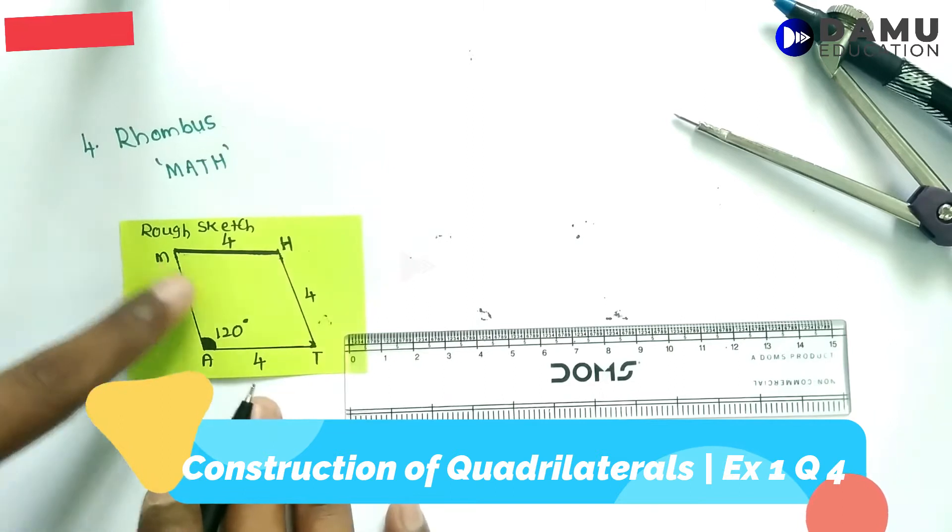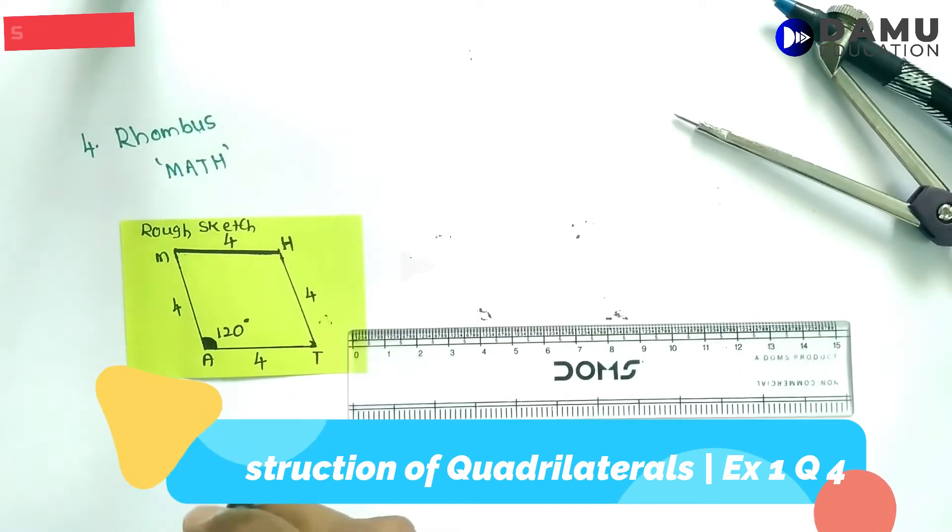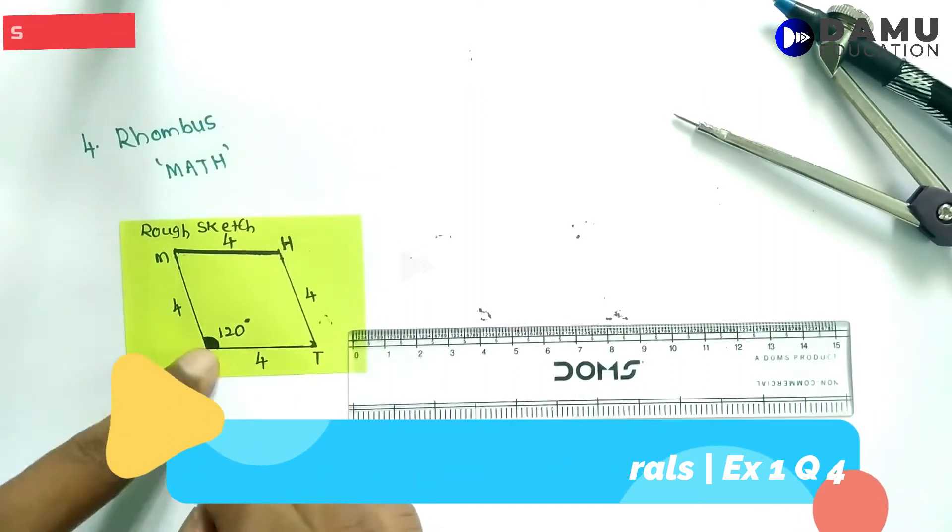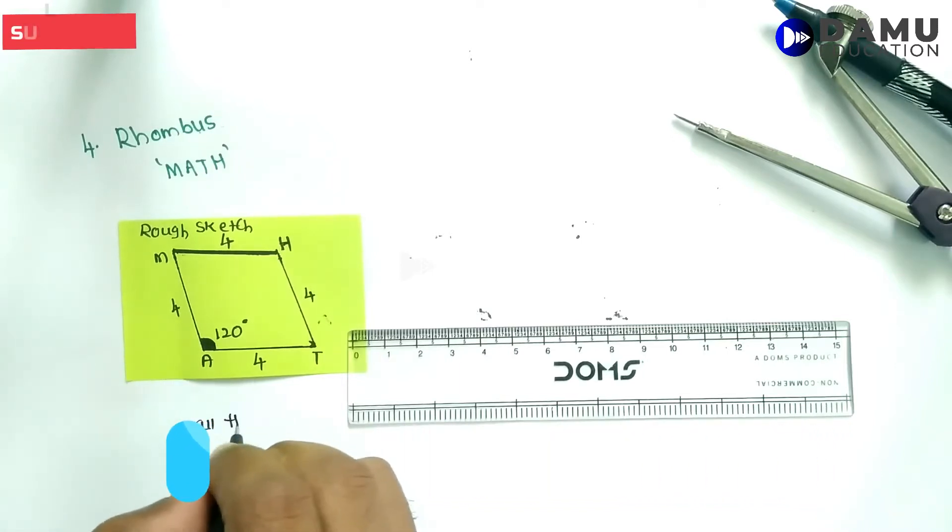Before we start, we need to know the rhombus condition: all sides are equal.